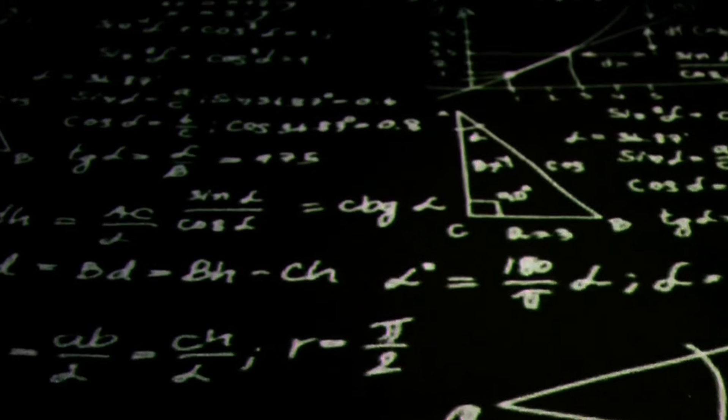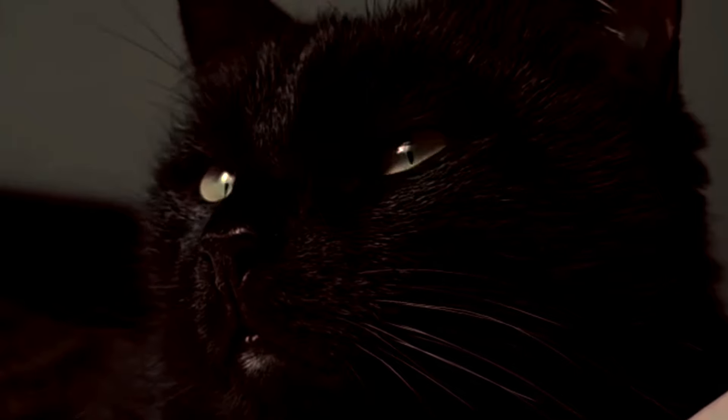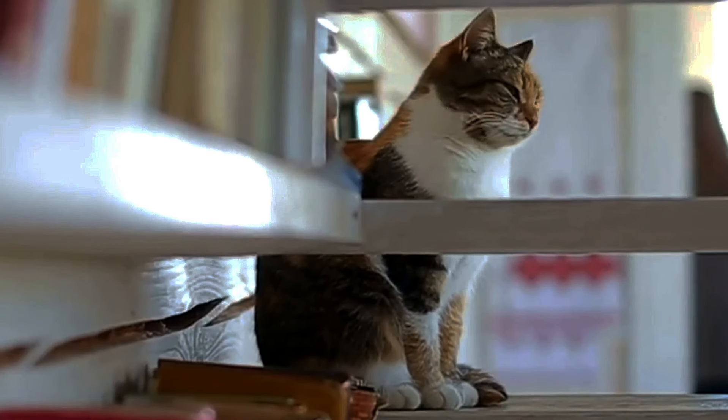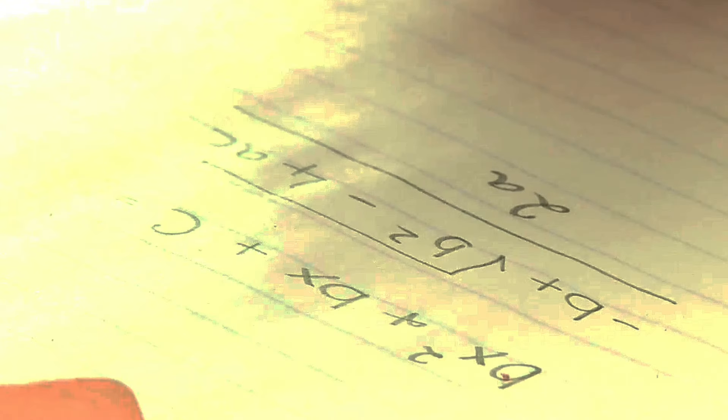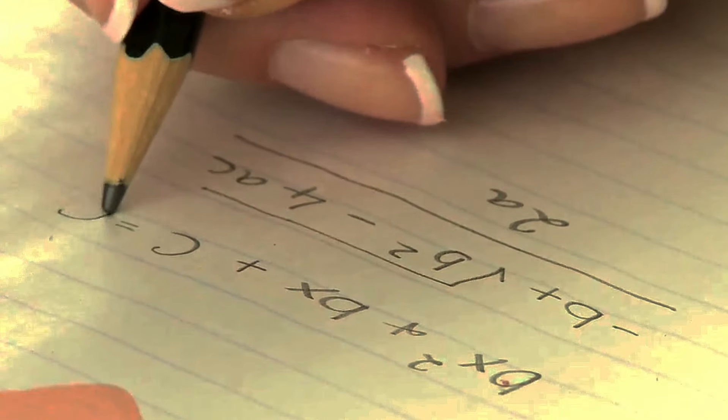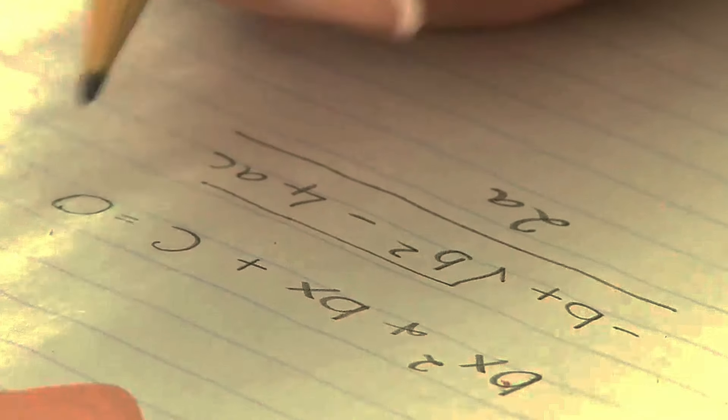The other form of Russell's Paradox involves properties. Some properties seem to apply to themselves while others do not. For example, the property of being a property is itself a property, while the property of being a cat is not itself a cat. Now consider the property that something has just in case it is a property that does not apply to itself. Does this property apply to itself? If we assume it does, then it doesn't. And if we assume it doesn't, then it does. Once again, we are faced with a contradiction.